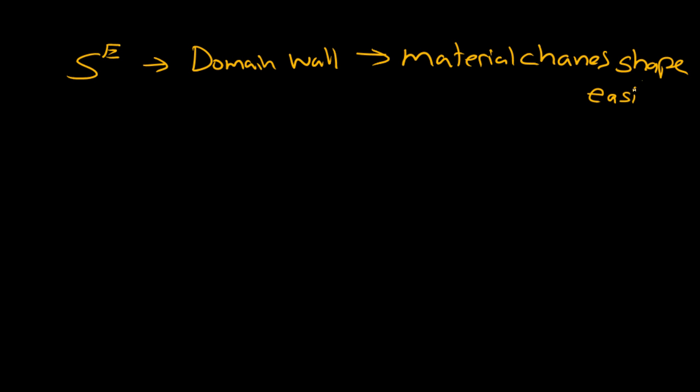How does it make the material have a larger compliance? Because of these domain walls moving, the material is changing shape easily. The material is changing shape easily.